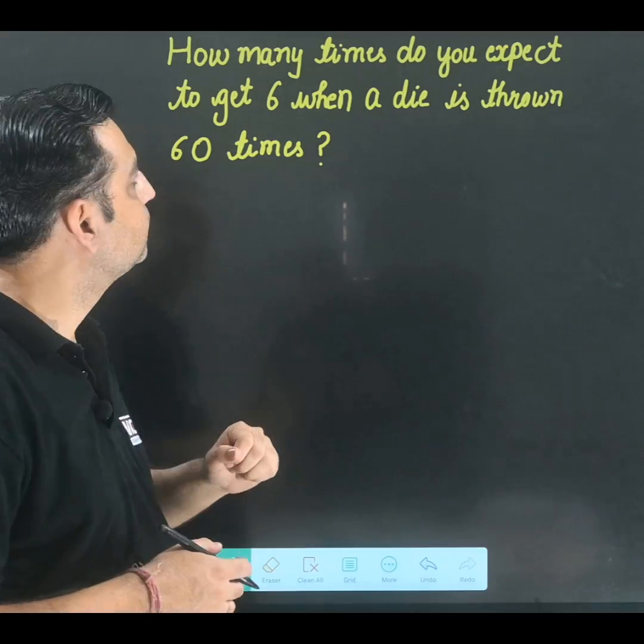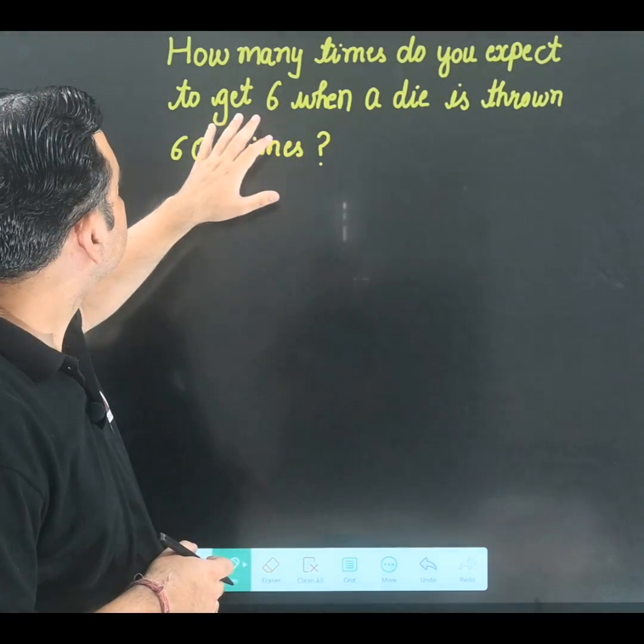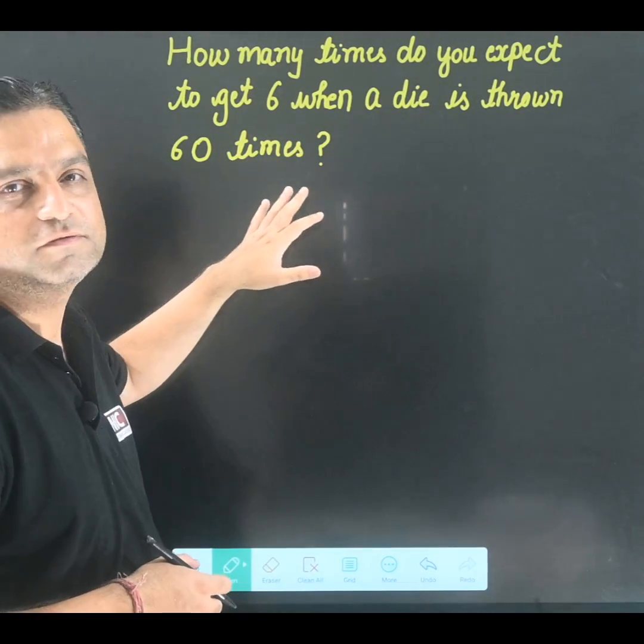Please read the statement carefully. How many times do you expect to get 6 when a die is thrown 60 times?